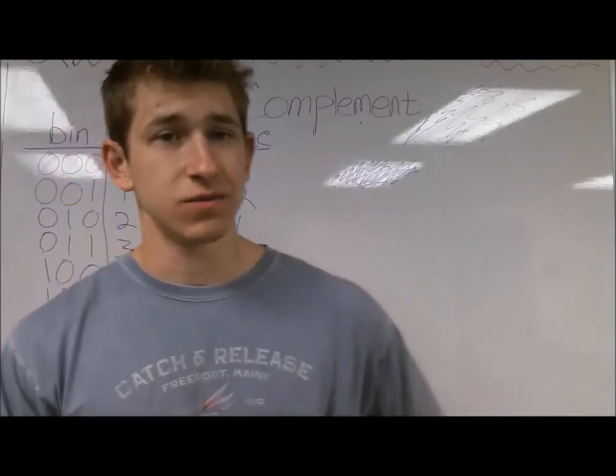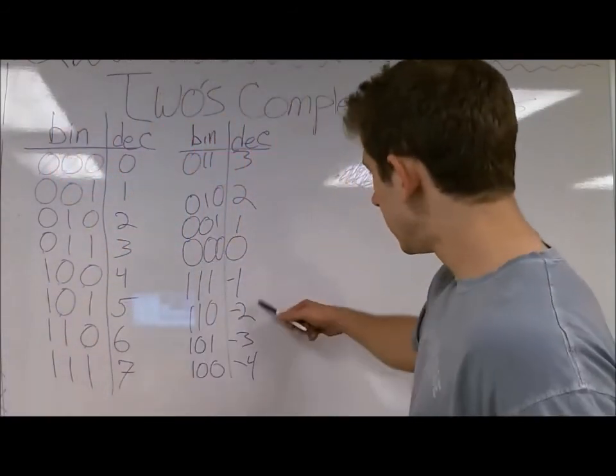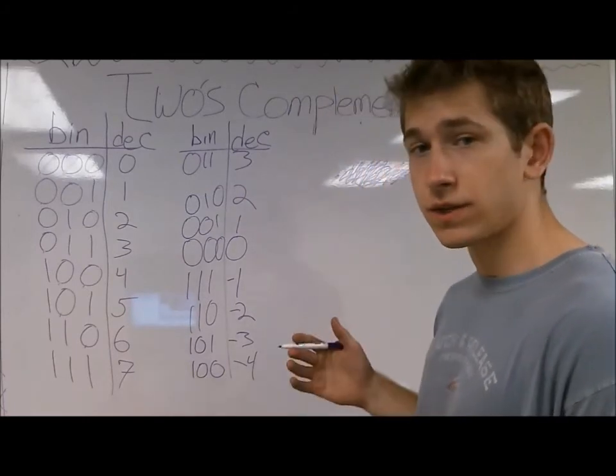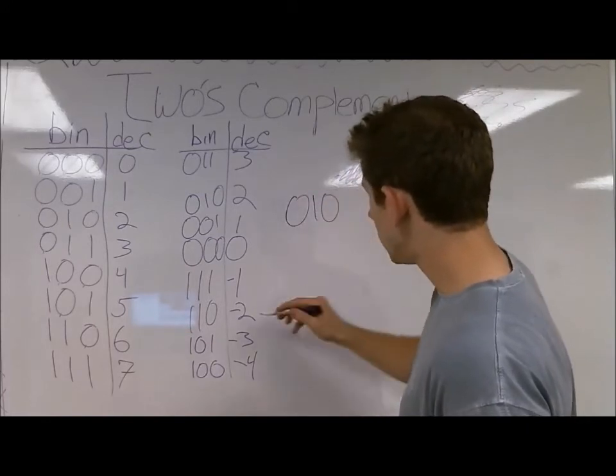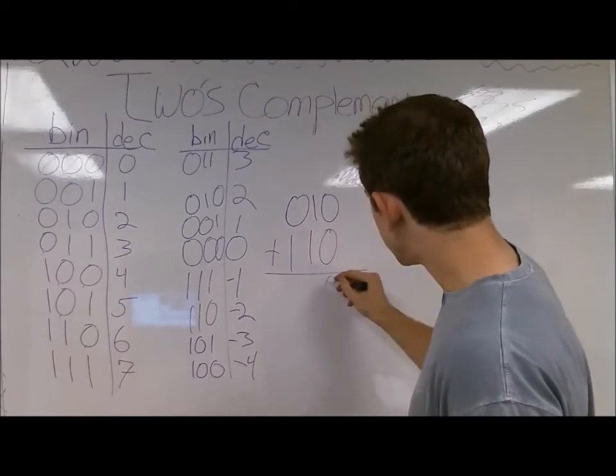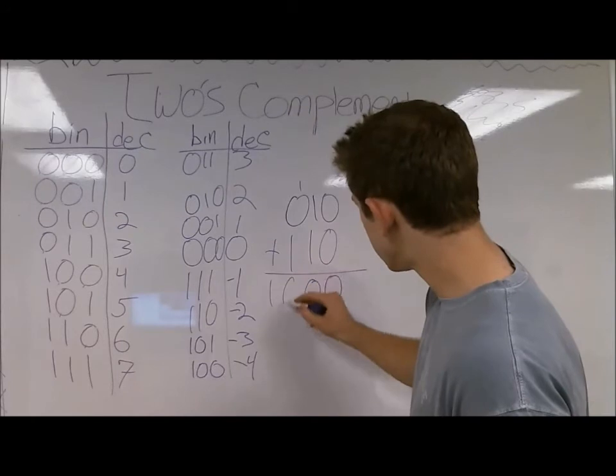Let's do some addition and subtraction with our negative and positive binary values. Let's take a negative 2 and a positive 2 and add them together. The result should be 0. We have 0, 1, 0, and 1, 1, 0. We're going to add these together. This is going to be 0, and this is going to be 0, and this is going to be 0.